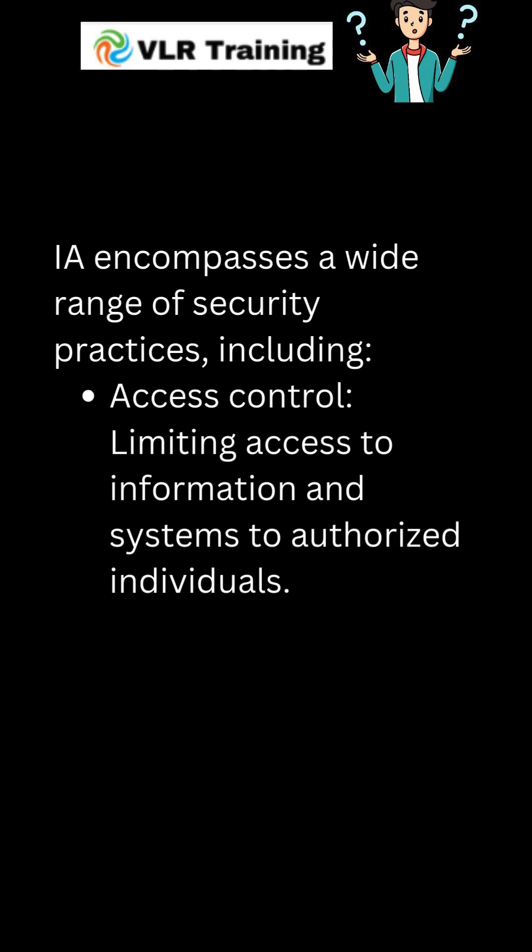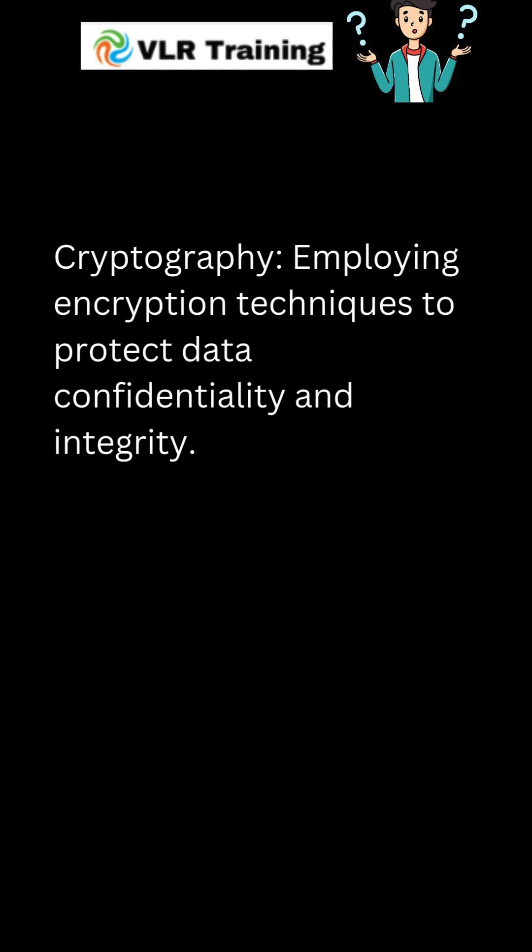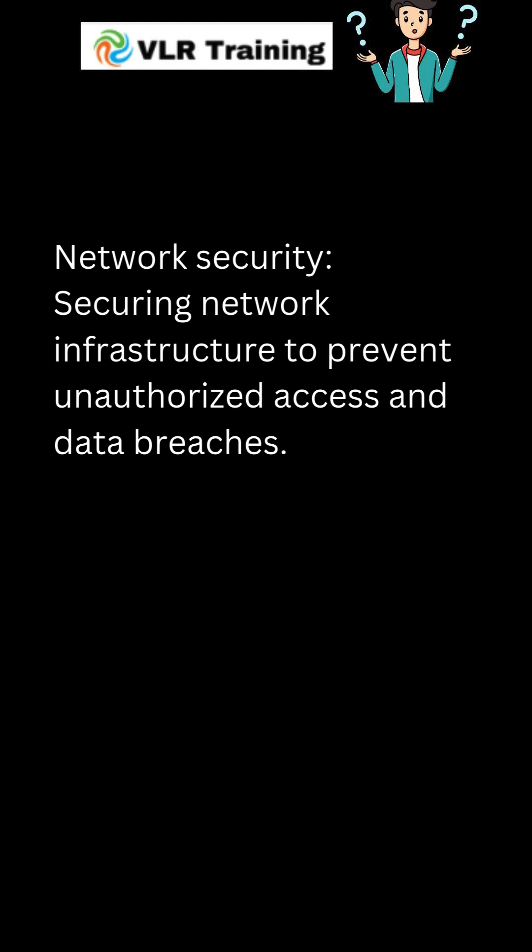IA encompasses a wide range of security practices, including Access Control — limiting access to information and systems to authorized individuals — Cryptography, employing encryption techniques to protect data confidentiality and integrity, and Network Security, securing network infrastructure to prevent unauthorized access and data breaches.